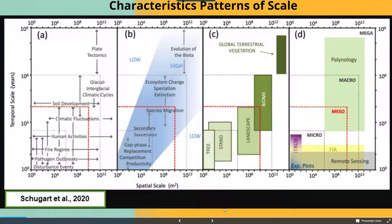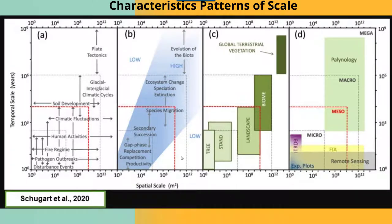In this figure we have characteristic patterns of scale that are important to recognize when you're conducting studies. Along the x-axis you have spatial scale in meters squared on a logarithmic scale, so it changes by a magnitude of 10 at each interval and repeats for each of the sections A through D. Along the y-axis we have a temporal scale, again a logarithmic scale in years. In this first section it's important to note biotic as well as abiotic and geographic activities and what scale they occur at.